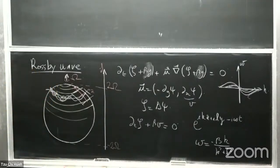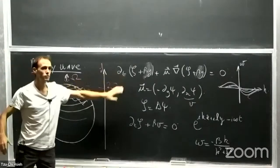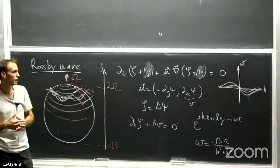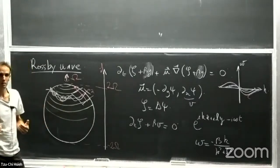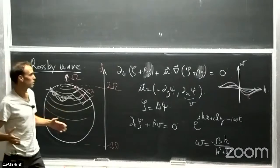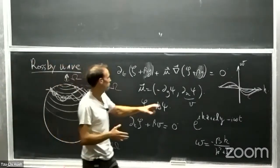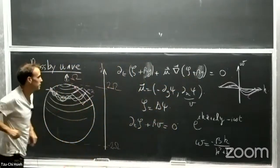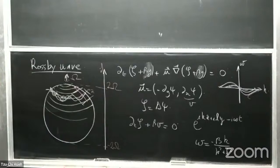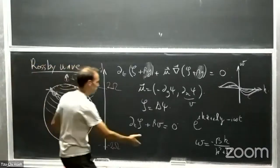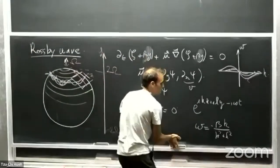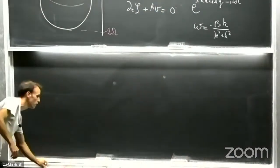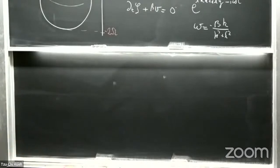Two remarks: first, within this model, these are plane wave solutions relevant for mid-latitude dynamics. But as soon as we take the shallow-water model, the wave becomes trapped at the equator, because the value of f naught is important. Second, to make a connection with the quasi-geostrophic limit: in the shallow-water model, for Kelvin waves, we had three wave bands.